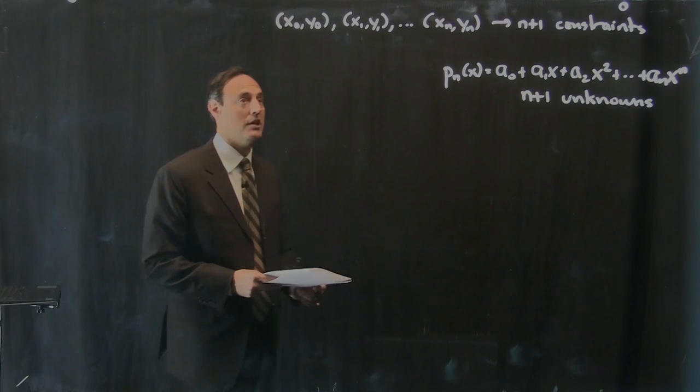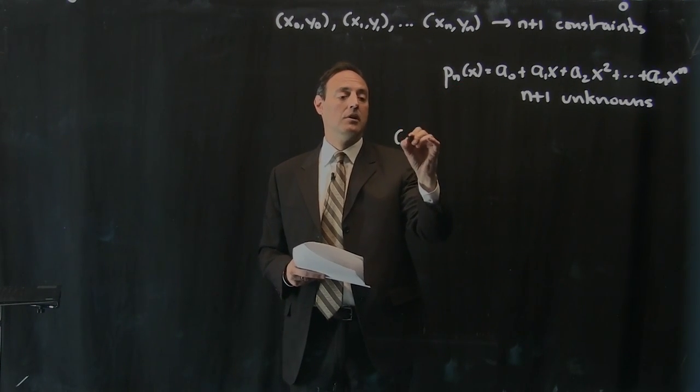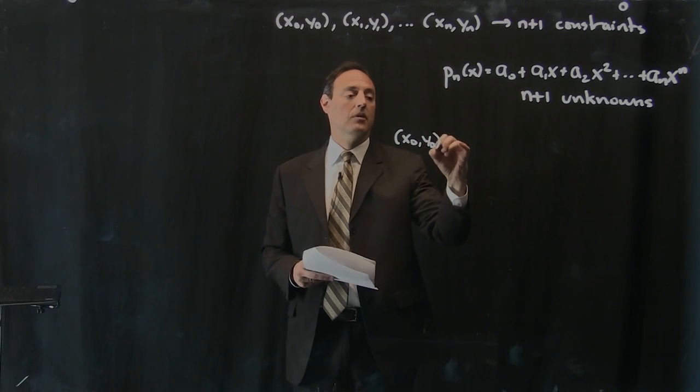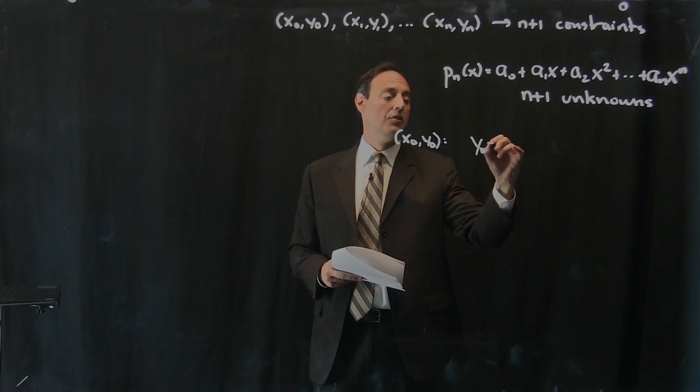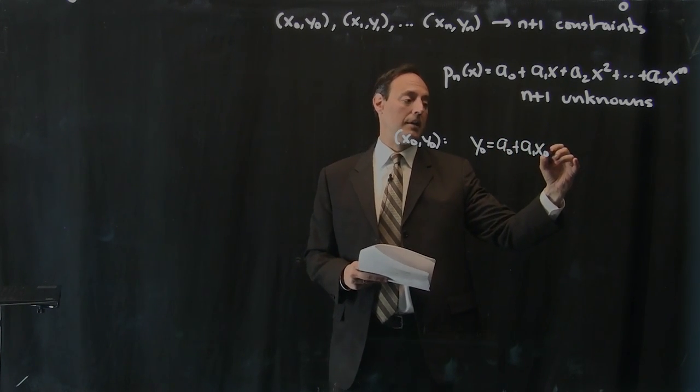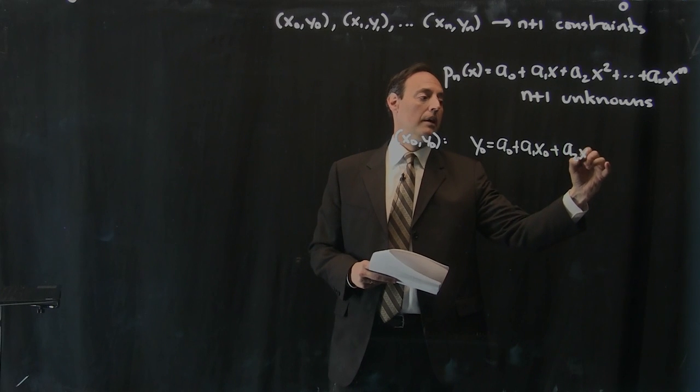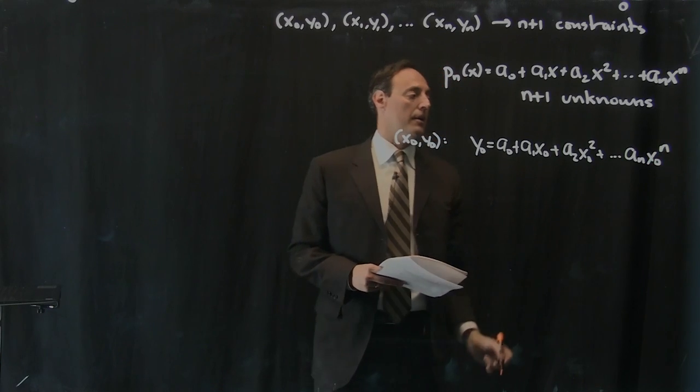Well, plug in each point. So notice p of x here, I can look at the point x0, y0. At that point, this thing here is y0 is equal to a0 plus a1 x0 plus a2 x0 squared, all the way up to a of n, x0 to the n.